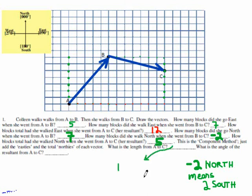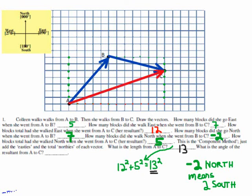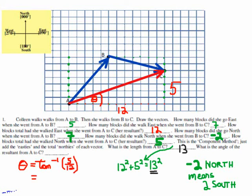We call this the component method. We just broke those vectors down into easties and northies - or what we call X's and Y's. Once you do that, you can just use Pythagoras because you know the big triangle: the resultant goes from there to there. You know it was twelve across the bottom and five along the side, so the resultant has to be thirteen. Then you use the inverse tangent function to find the angle. So you've turned it into a nice ninety-degree triangle.